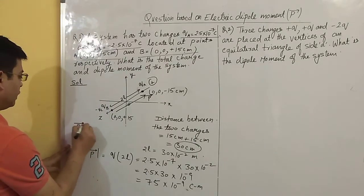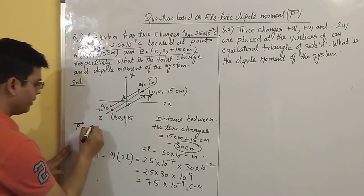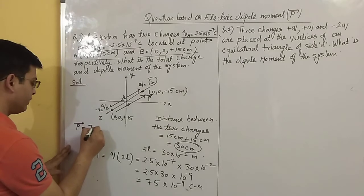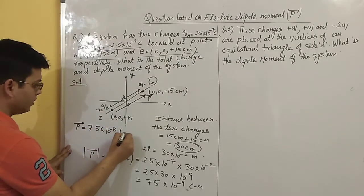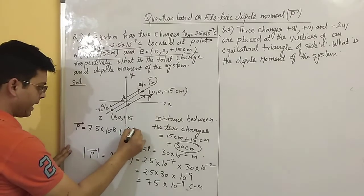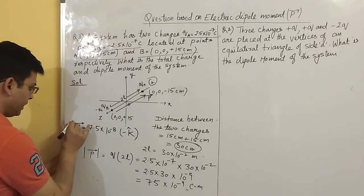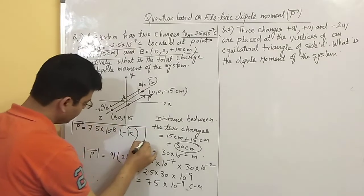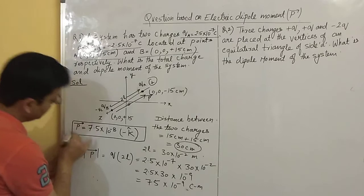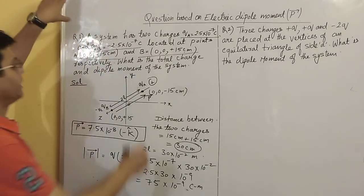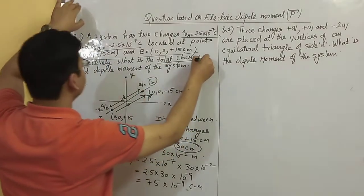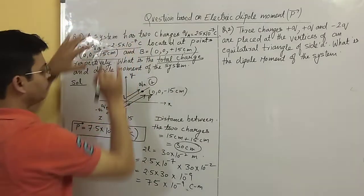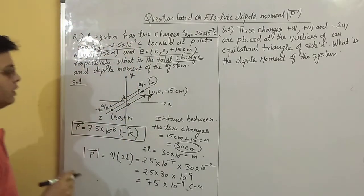The net dipole moment is 7.5 into 10 to the power minus 8 C·m, directed from negative to positive charge — that is, along the +Z axis from A to B. The total charge on the system is QA plus QB, which equals zero.